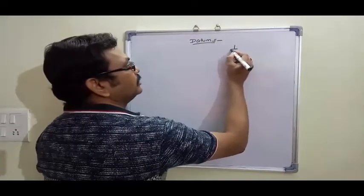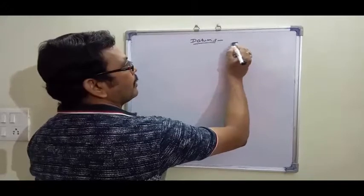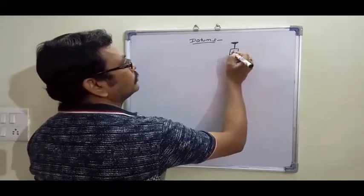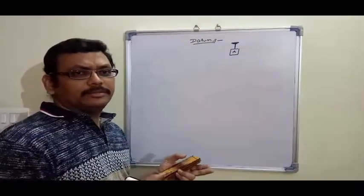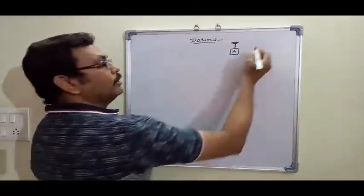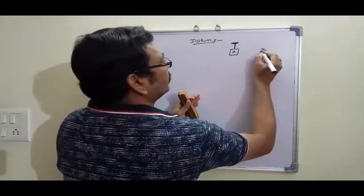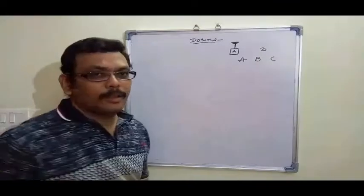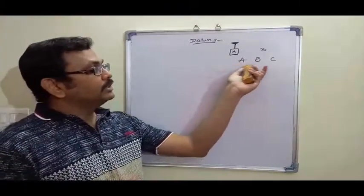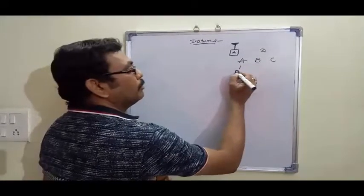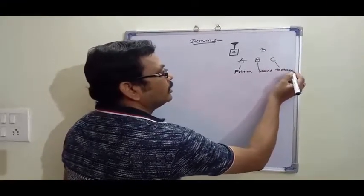This is the indication of datums. We can use any number of datums, but basically to arrest a component we need three datums: A, B, and C. A is called the primary datum, B is the secondary datum, and C is the tertiary datum.